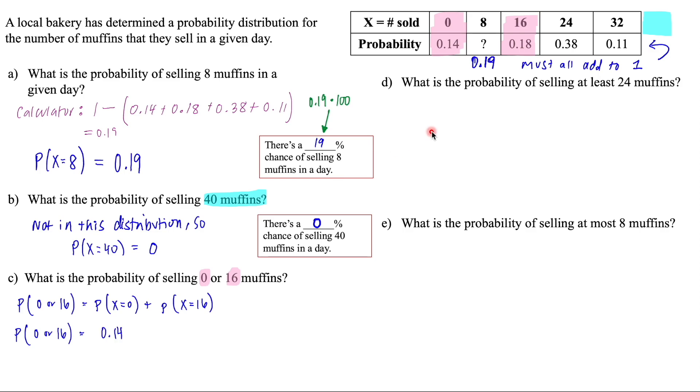And so we saw on the table that that's 0.14 plus 0.18. And if we grab our calculator, that's going to give us 0.32. So that means that there is a 32% chance of selling zero or 16 muffins in a day.